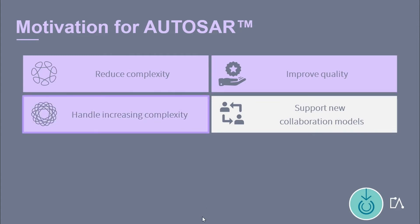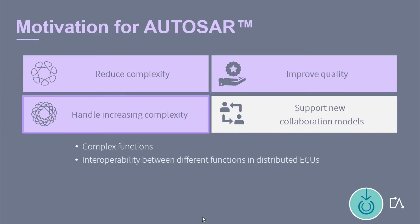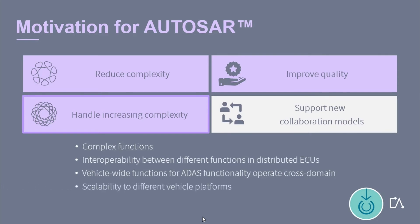AUTOSAR was intended to master the continuously growing complexity of software by applying a harmonized reference architecture. Aspects for increasing complexity are: functions of continuously growing complexity have to be implemented; higher interoperability between different functions in distributed ECUs has to be enabled; vehicle-wide functions for AUTOSAR functionality such as autonomous driving have to operate cross-domain; and functions have to be scaled to different vehicle platforms.